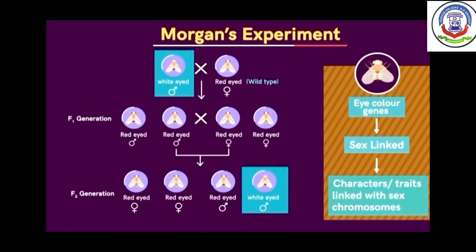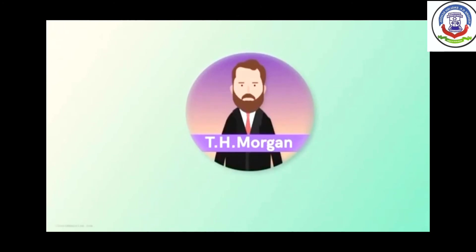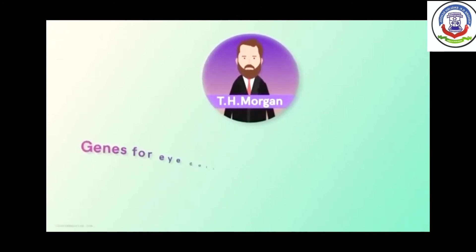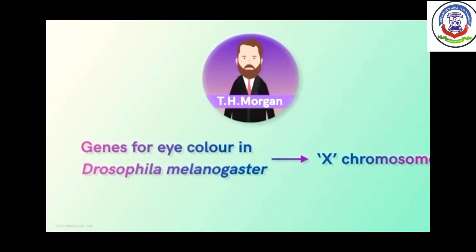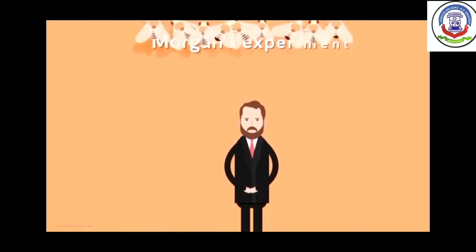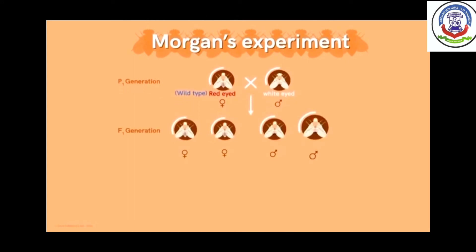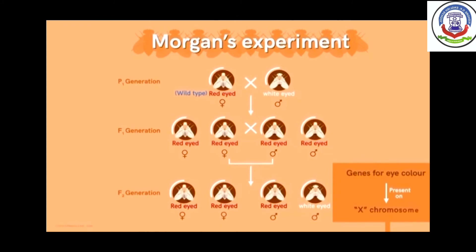Morgan went a step ahead and proposed that the genes for eye colour are present on the X chromosome in the fruit fly. To understand this better, let's carry out a theoretical cross. We have seen that Morgan crossed a white-eyed male with a red-eyed female (wild type), the F1 generation had all offspring with red-coloured eyes, and the F2 results led him to assume that eye-colour genes are present on the X chromosome in fruit flies.